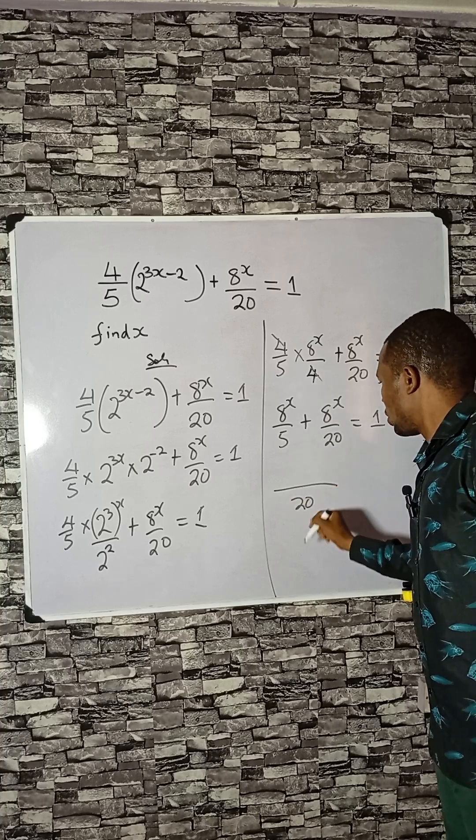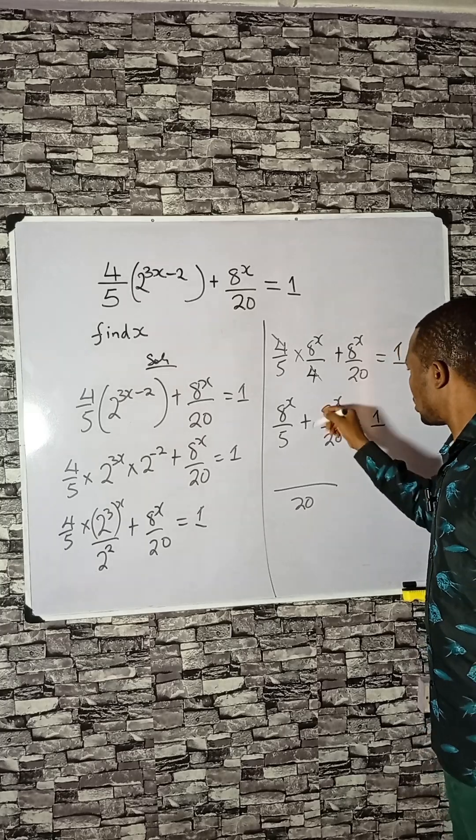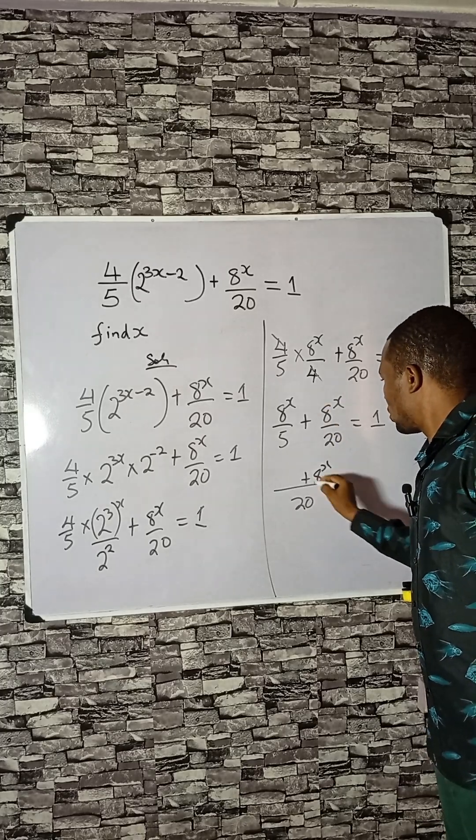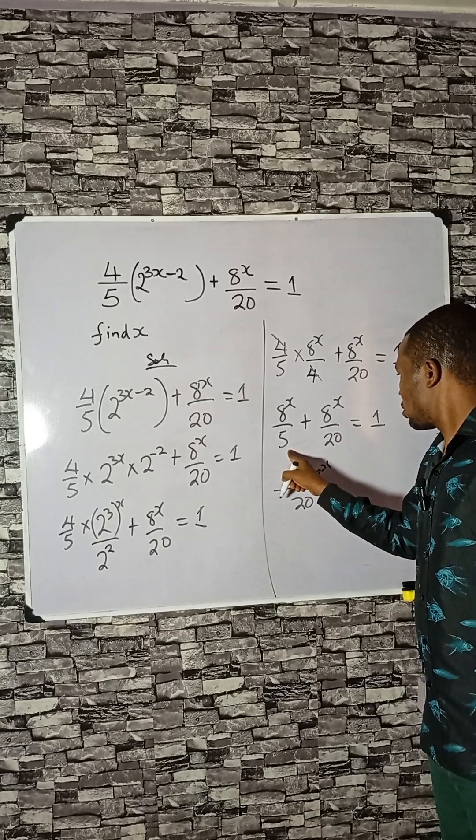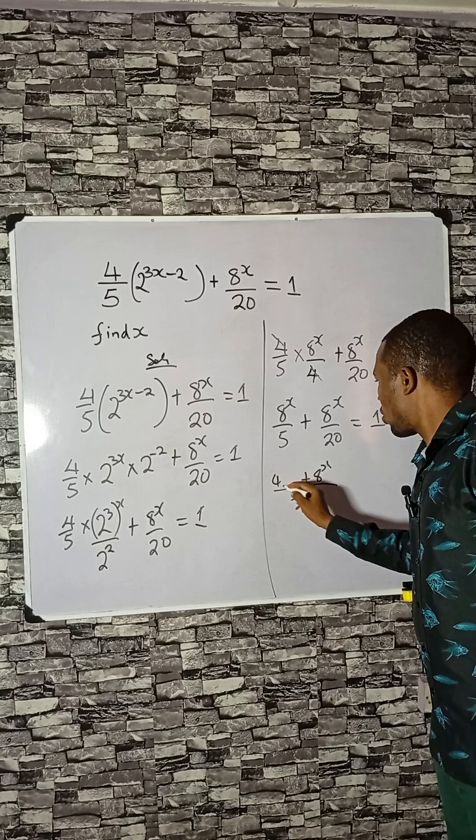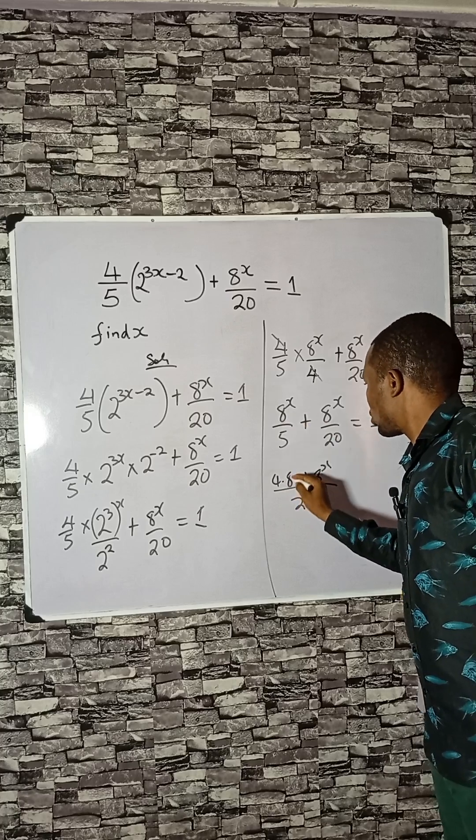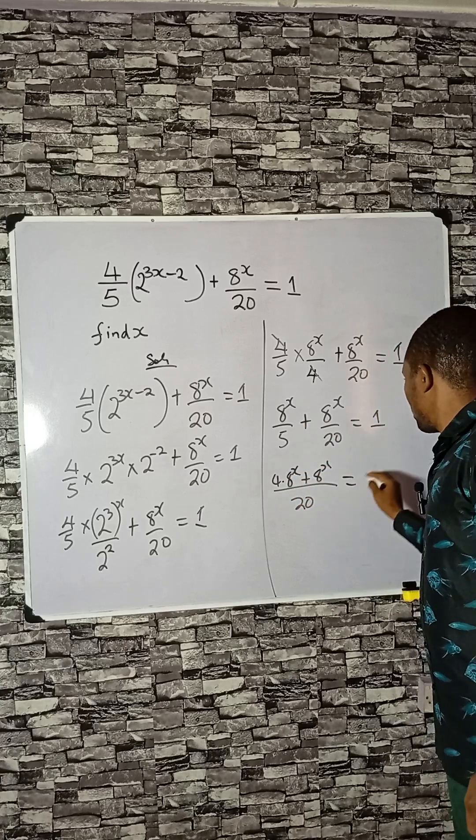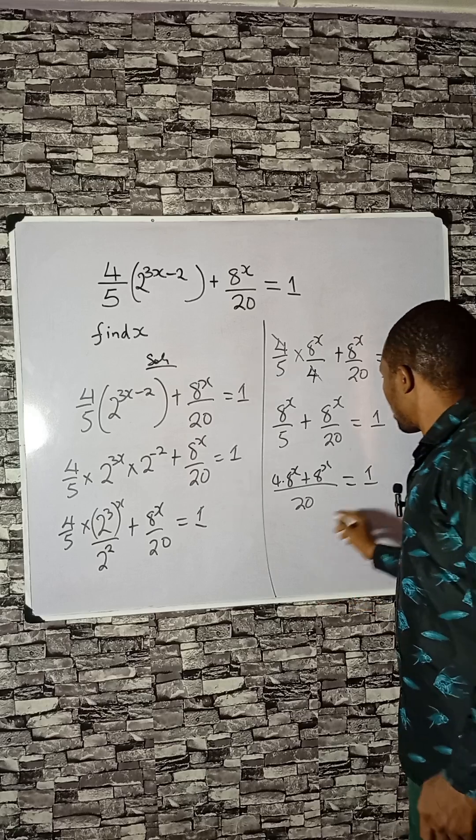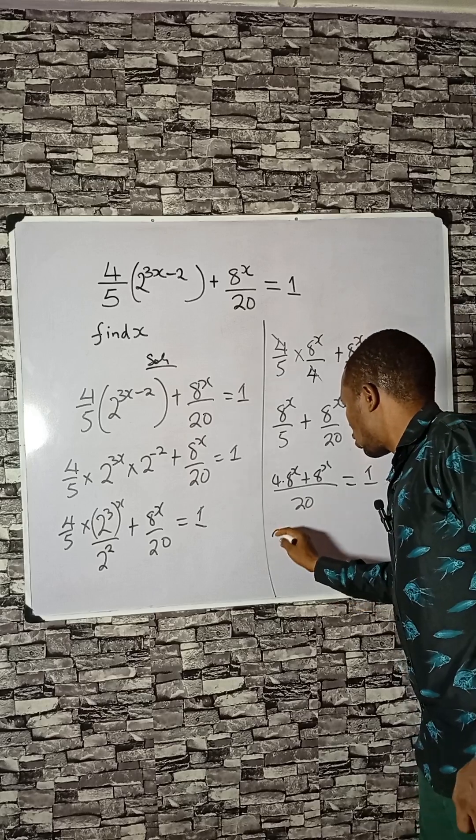The LCM is 20. 20 divided by 20 is 1, and 20 divided by 5 is 4. There are 4 times this. So we have 20.